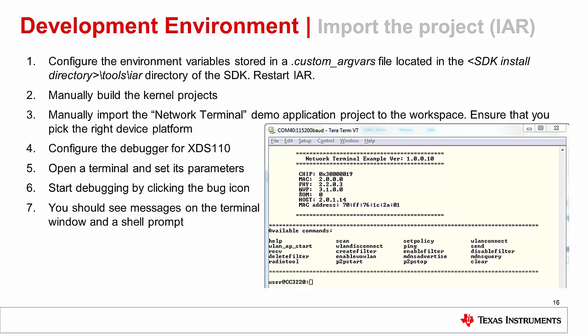Next, import the network terminal demo application to the workspace. Create a new empty project by going into Project, Create New Project, then choose the ARM toolchain. Choose an empty project and click OK. Browse to the location where you want to save this project and save with a file name. Choose Help, IAR Information Center for ARM, choose Integrated Solutions, then scroll down and choose Texas Instruments example projects. Click on the example applications link, which refers to the example root link in your argvars. Click on an example according to the type of device and OS flavor. All project files should be imported to the workspace.